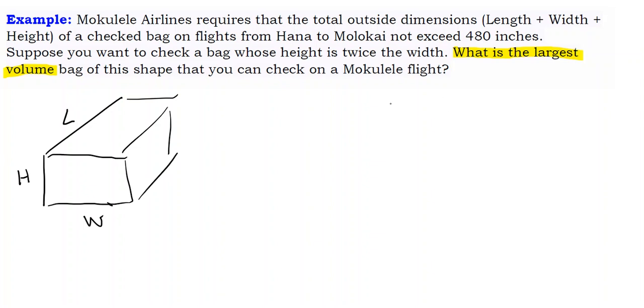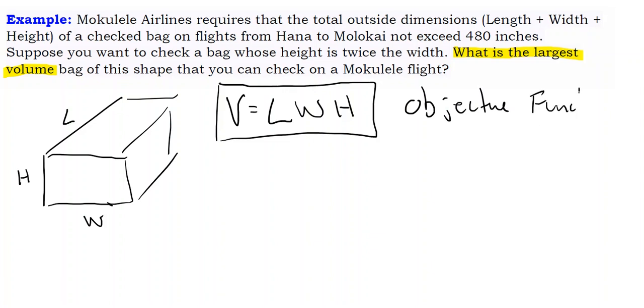And we want to maximize that. We want the largest volume. Well, the volume of an object of this shape can be calculated by multiplying the length times the width times the height. So this is our objective function. That is the first step. Always determine what you are trying to optimize.